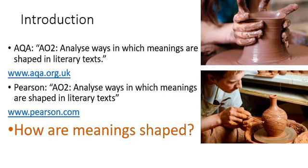We are going to be doing this because both of the major awarding bodies — both AQA and Pearson, that used to be known as Edexcel — list in their assessment objectives the ways in which you need to analyse the text. AO2 for both of the awarding bodies, and you can find these details on their respective websites, asks you to analyse ways in which meanings are shaped in literary texts, and both of them use that terminology.